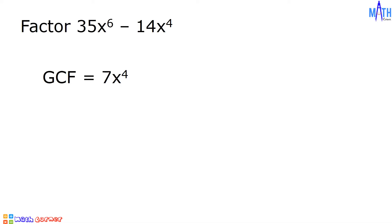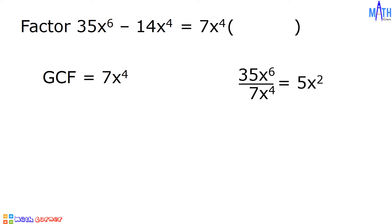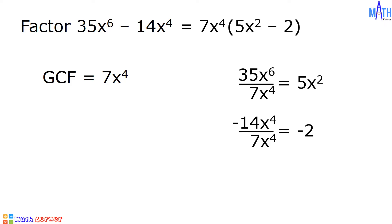Let us factor out the GCF, 7x raised to 4, and let us determine the other factor. 35x raised to 6 divided by 7x raised to 4 is equal to 5x squared. And negative 14x raised to 4 divided by 7x raised to 4 equals negative 2. And the other factor is 5x squared minus 2. So 35x raised to 6 minus 14x raised to 4 is equal to 7x raised to 4 times the quantity 5x squared minus 2.